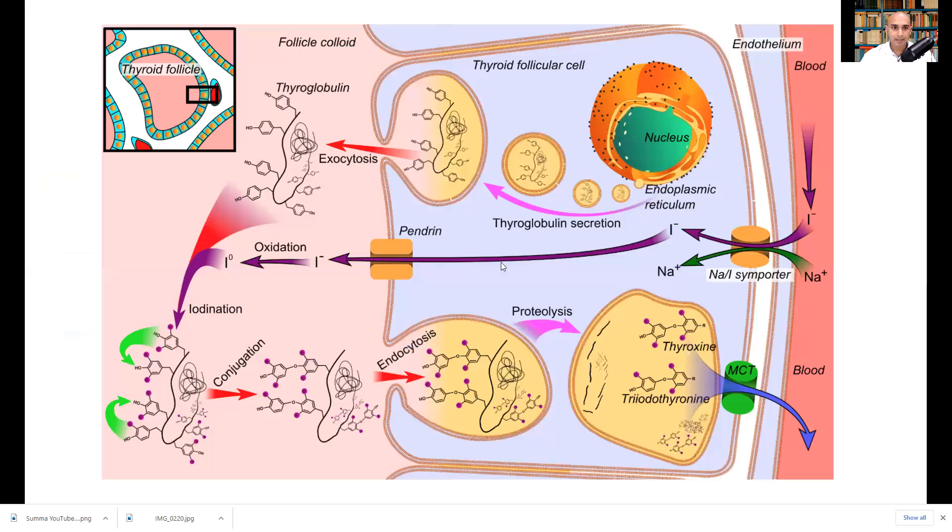All right, so this picture actually goes into much greater detail about what happens at a cellular level in the thyroid follicular cell. You can see iodine's being absorbed from the blood into the thyroid follicle cell. Remember, that's the ring of cells around the follicle. And thyroglobulin is being secreted into the colloid right here, and then iodine goes into the pendrin receptor, it gets oxidized through peroxidase enzymes, and it binds to these ends on the thyroglobulin. And then thyroglobulin is then broken apart.